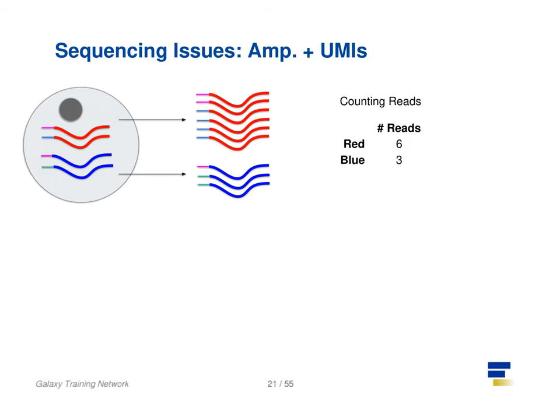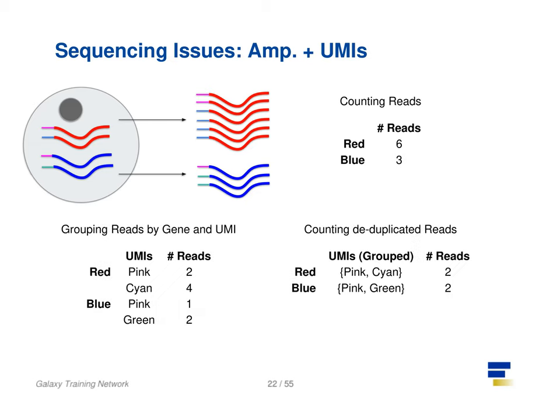Consider the example: we have two red transcripts and two blue transcripts inside the cell, which after amplification equate to six red transcripts and three blue transcripts. If we were to compare the differential gene expression between the red and blue transcripts just by looking at the amplified reads, we would come to the false conclusion that the red transcripts are expressed twice more than the blue. However, if we group the reads by their UMIs and then count only the number of unique UMIs per transcript, deduplicating the reads which share the same transcript and UMI, we arrive at two red reads and two blue reads, which better represents the true number of transcripts.